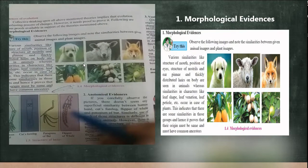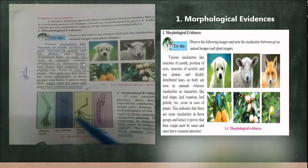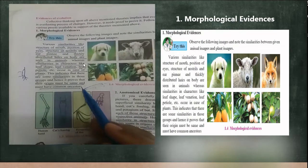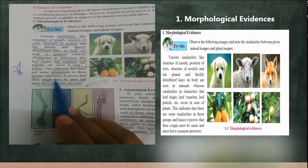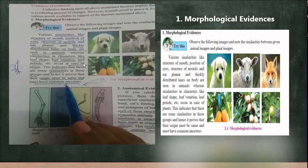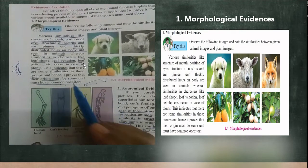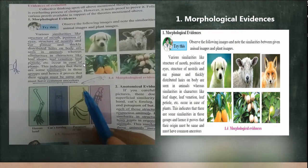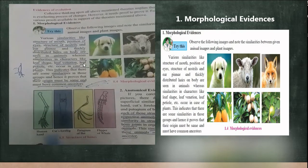Morphological evidences are proofs which support the theory of evolution. These characteristics help us understand that all organisms have been generated from common ancestors. The key point to remember is that the similarities in structures and characteristics prove that their origin must be the same — meaning they evolved from common ancestors. This makes morphological evidence one of the supporting proofs for the theory of evolution.